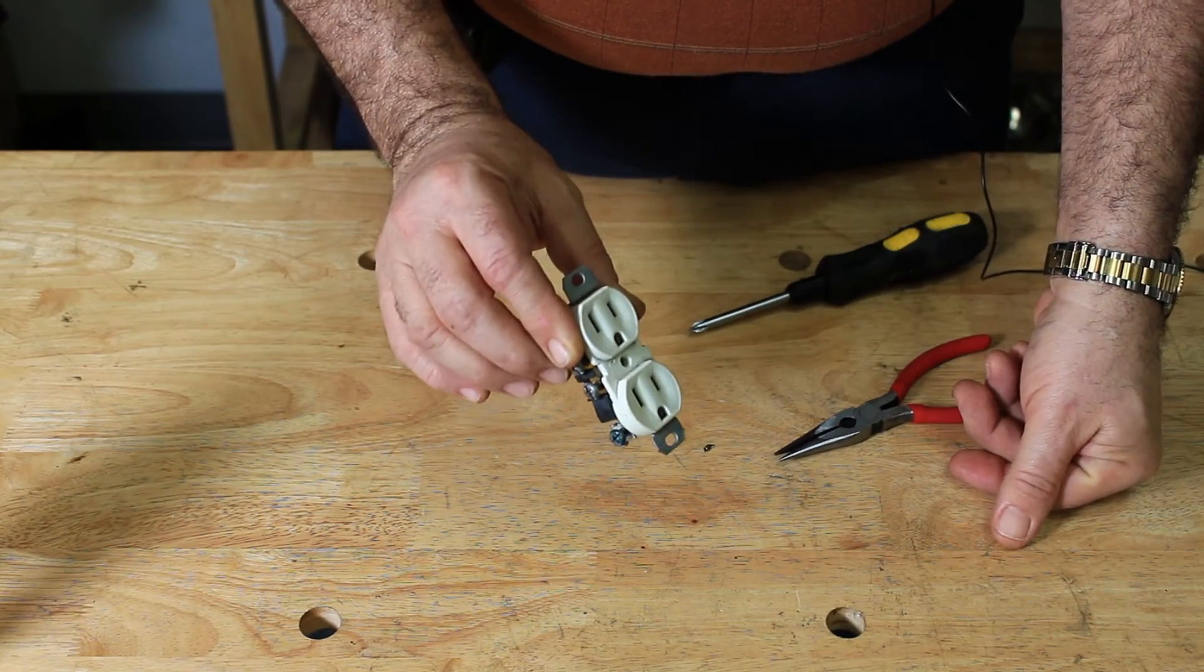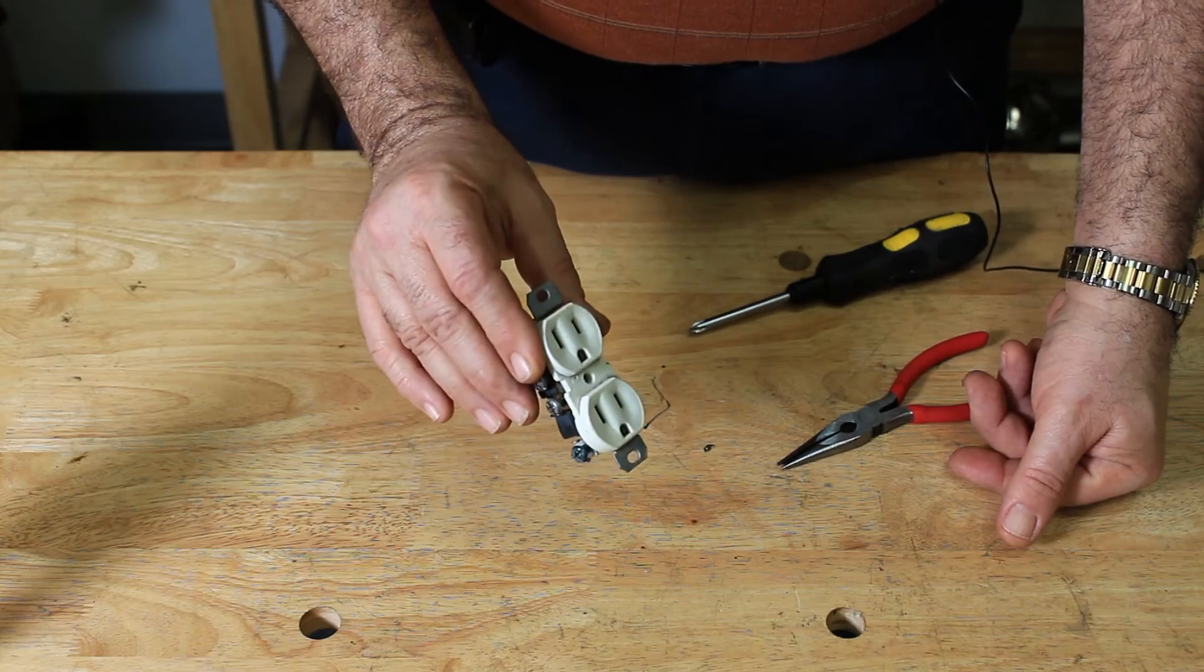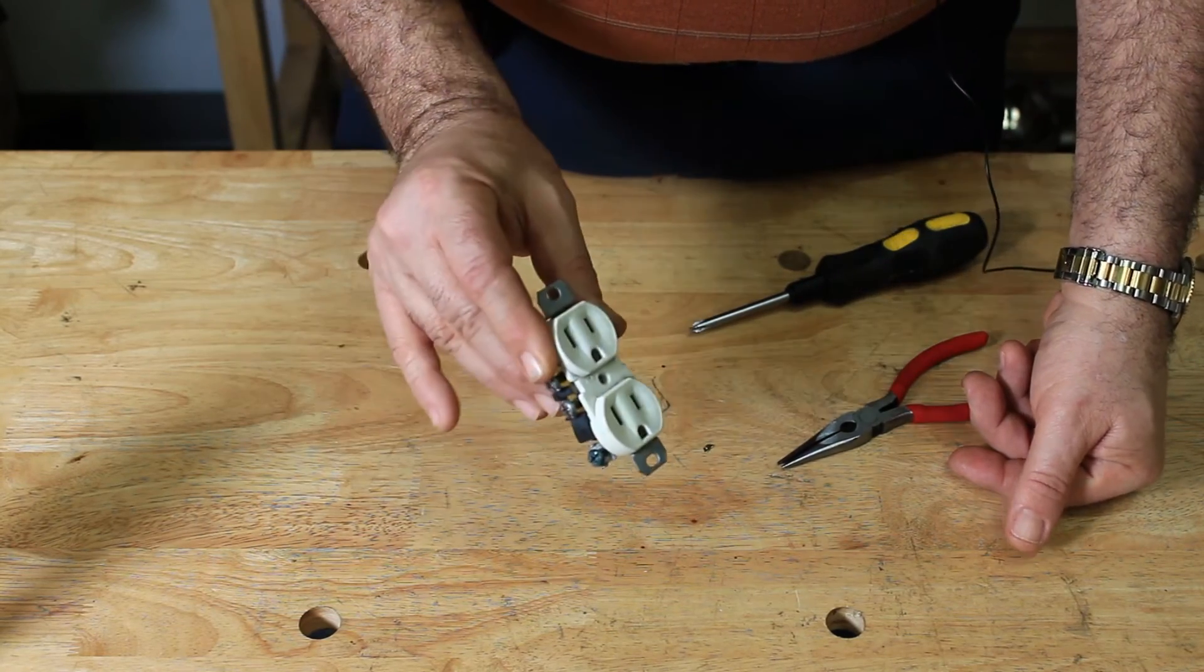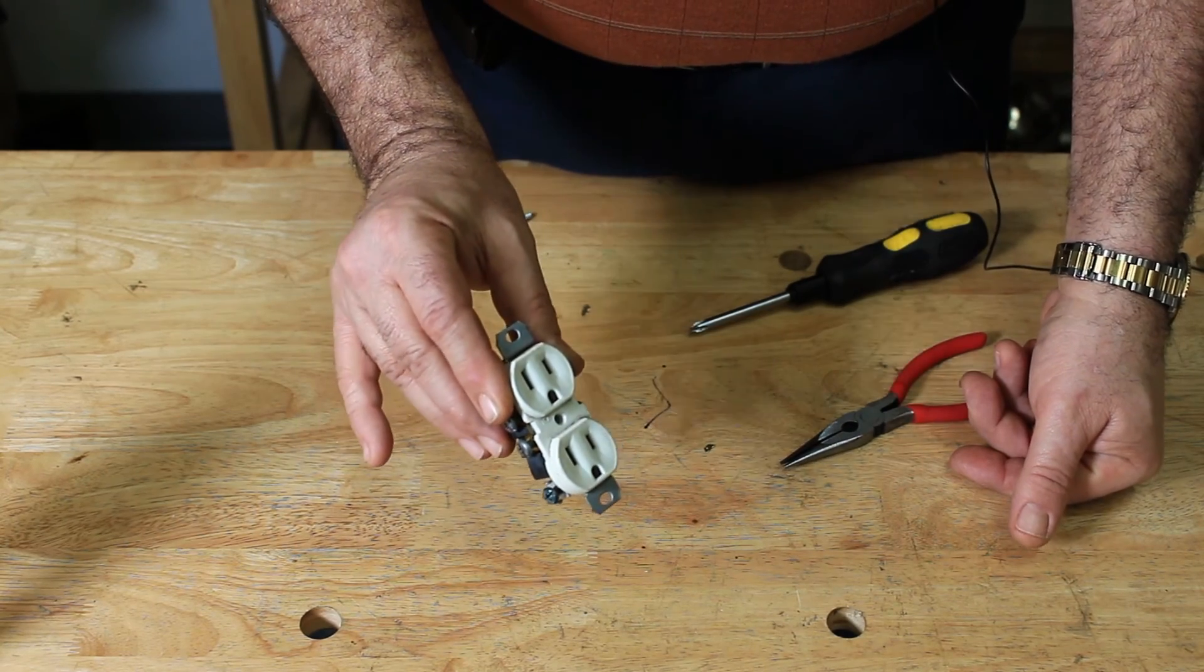Just remember to go back and change your breaker to a 15 amp, 220 volt breaker because you probably have a 30 amp or a 40 amp in there. And you'll want to reduce it so everything's safe.